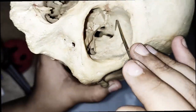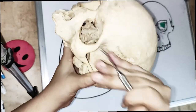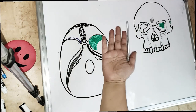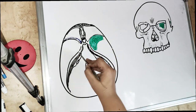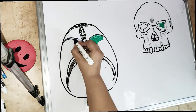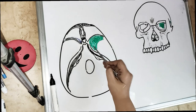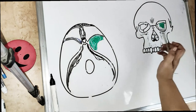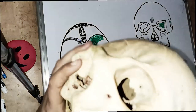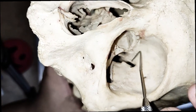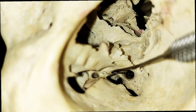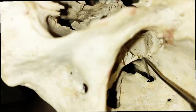Then we have the sphenoid bone. To understand the sphenoid bone you need a cut section or cross section. The sphenoid bone has a body — this is the body of the sphenoid. From the cut section we can see the lesser wing of the sphenoid and the greater wing of the sphenoid. From the front view, the lesser wing of the sphenoid is close to the optic canal, and the greater wing of the sphenoid is lateral to it. This is the superior orbital fissure and this is the inferior orbital fissure.